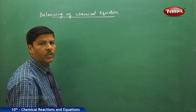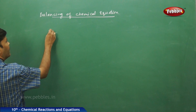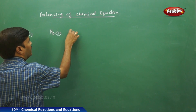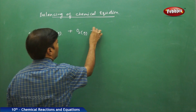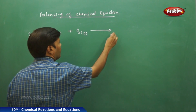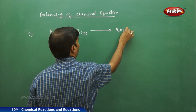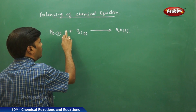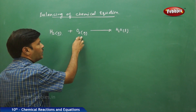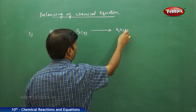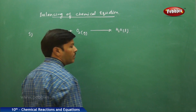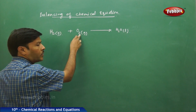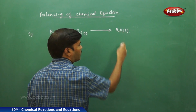Let us study the balancing of a chemical equation through one simple example. We can take H₂ gas — H₂ gas reacts with oxygen gas and undergoes a chemical change to give one molecule of water liquid. The reactants are hydrogen gas molecules and oxygen gas molecules; they undergo chemical change and give rise to new product formation, that is, water molecules as products. When balancing a chemical equation, you should focus on the various types of atoms on the reactant side and the various types of atoms on the product side.